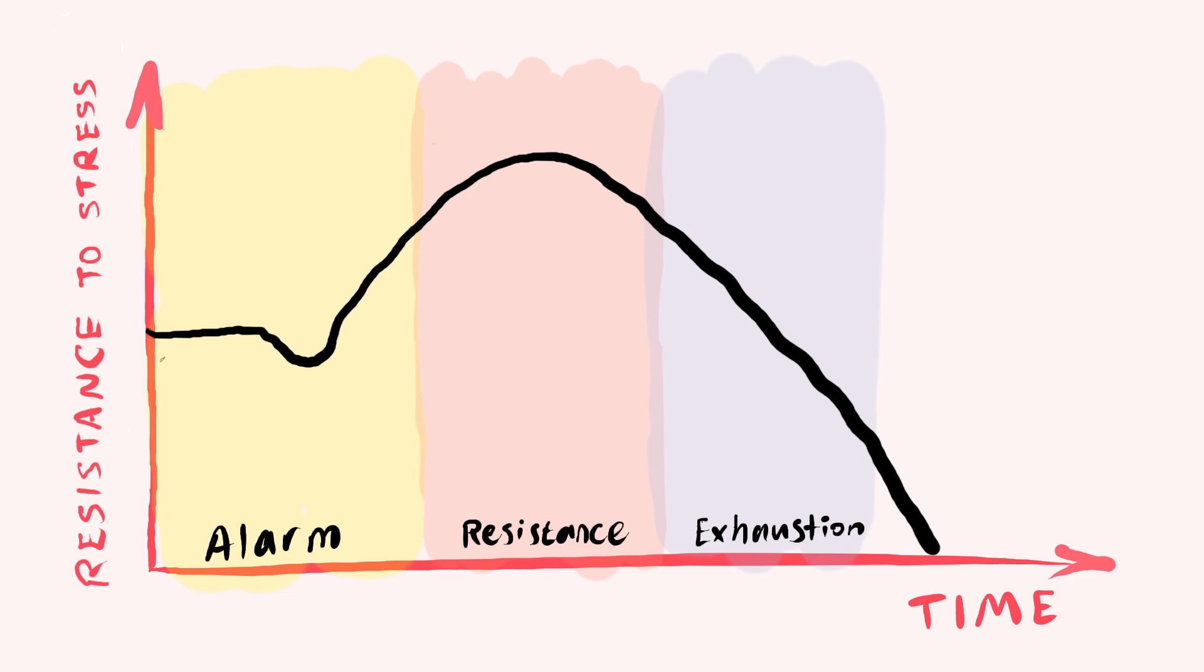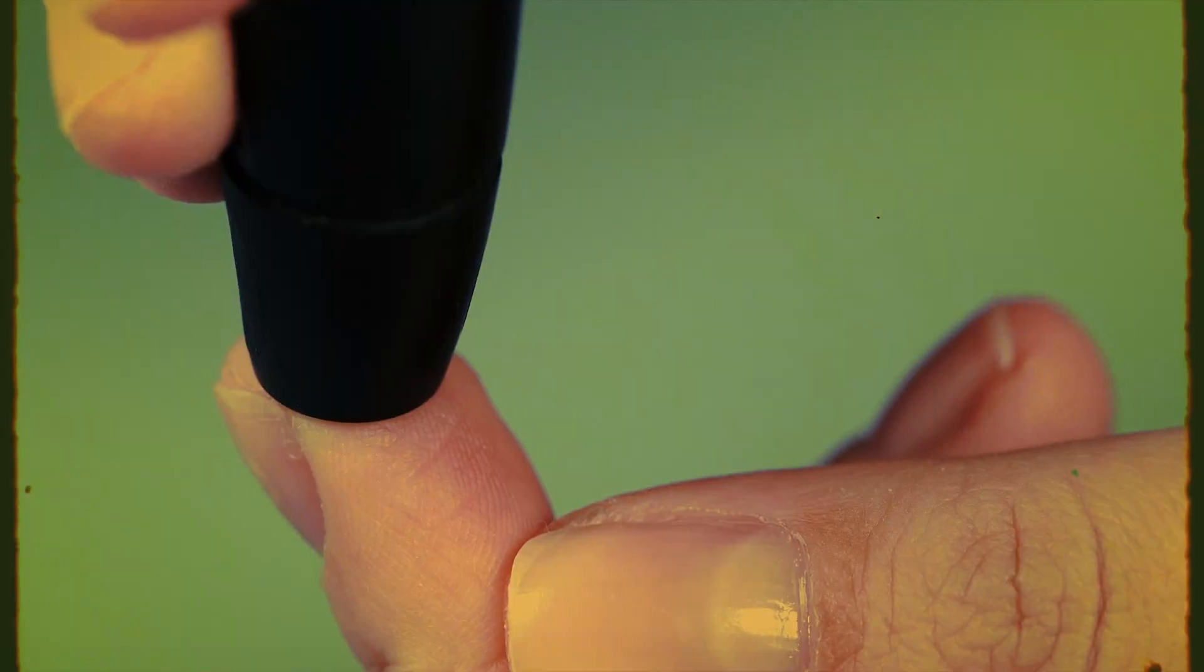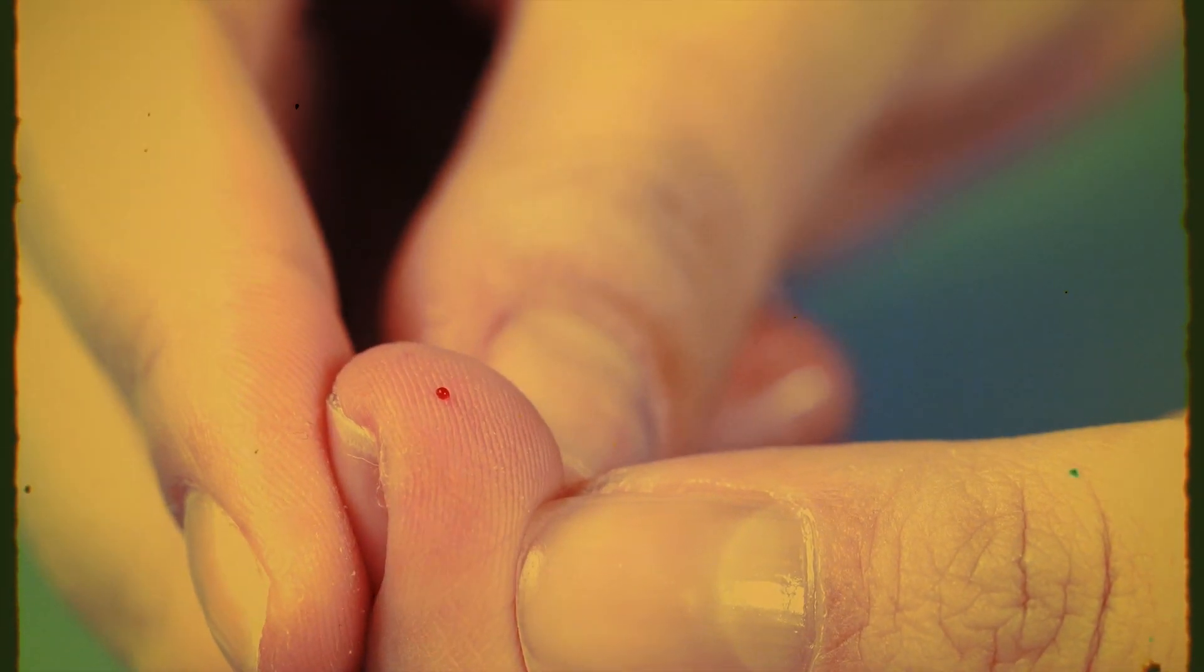Chronic stress can pave the way to diabetes, overburdening our ability to regulate glucose.